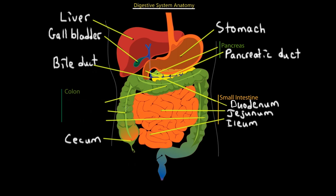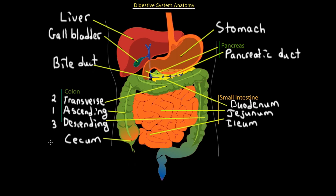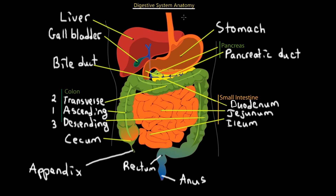Moving along from the small intestine, the food is now passed from the ileum to the cecum. The cecum is the beginning of the large intestine, also known as the colon. The next part is the ascending colon, then going across is the transverse colon, and the fold going down on the other side is the descending colon. From the descending colon it goes into the rectum, and finally the fecal matter exits through the anus. There's also a small structure hanging off the cecum called the appendix.